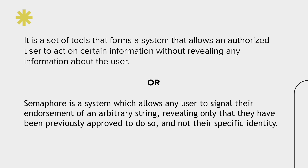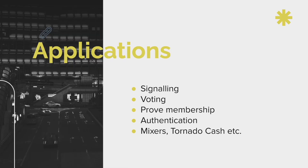The official definition, which can be confusing but you need to read it two or three times to understand it, says: semaphore is a system which allows any user to signal their endorsement of an arbitrary string, revealing only that they have been previously approved to do so and not their specific identity. Whenever a user is authorized to perform a certain action, they are able to perform that action without revealing their identity.